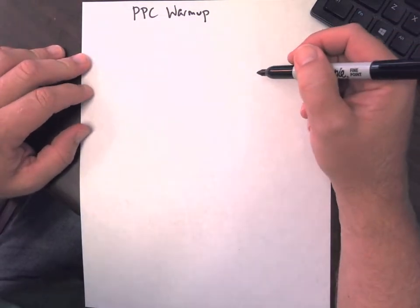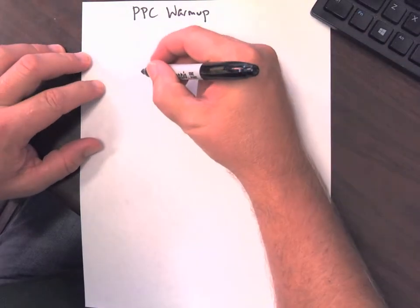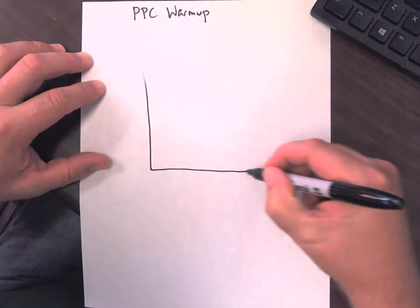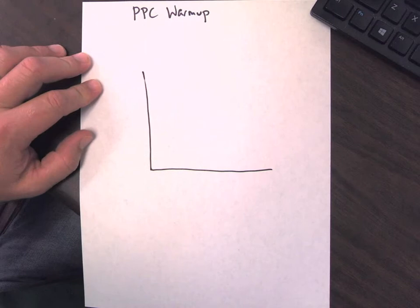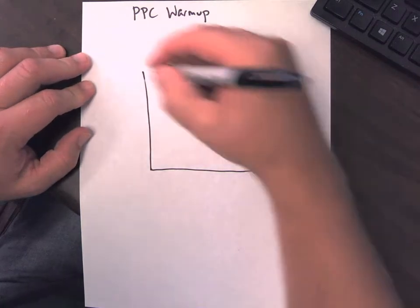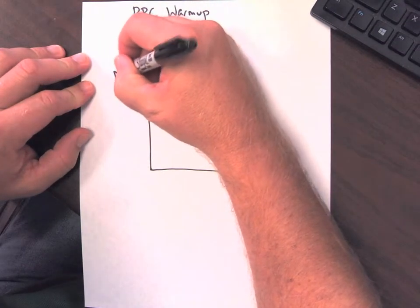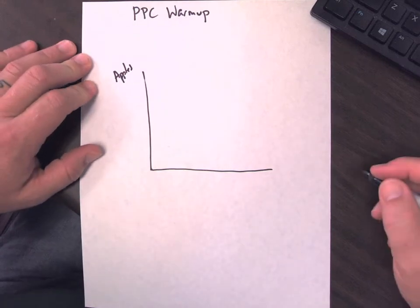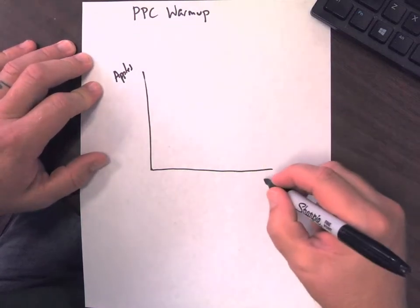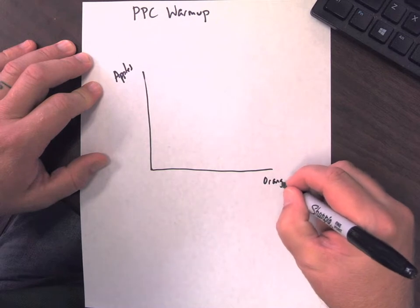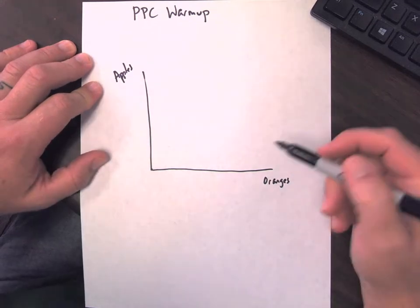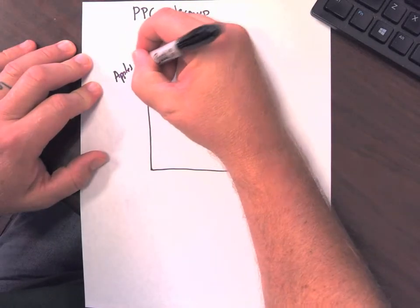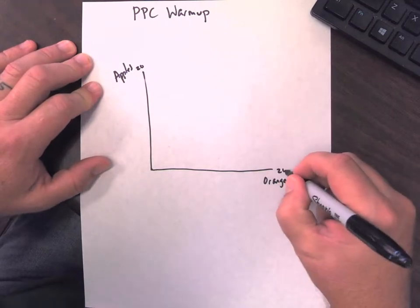First direction says draw a correctly labeled production possibilities curve. I'll do one of these right here. And label y-axis as apples. And the x-axis as oranges.